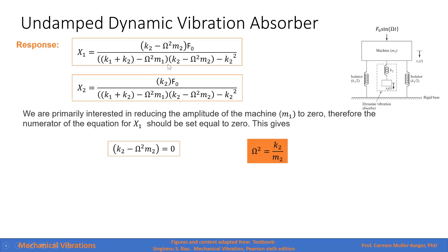We are primarily interested in reducing the amplitude of the machine that was initially at resonance. Therefore the numerator of the expression for x1 should be equal to zero. In order to make this expression equal to zero, we see that the natural frequency of the dynamic vibration absorber itself must equal the external forcing frequency. That is how we design our dynamic absorber — the relationship between the stiffness and mass of the absorber equals the square of the forcing frequency.